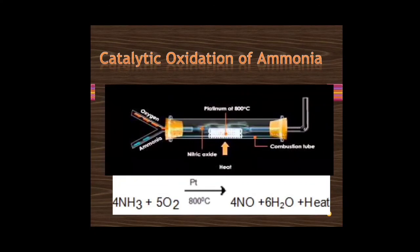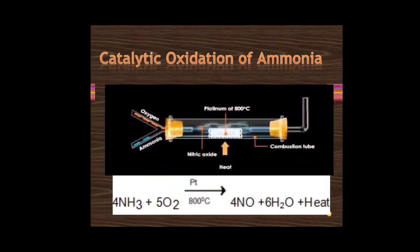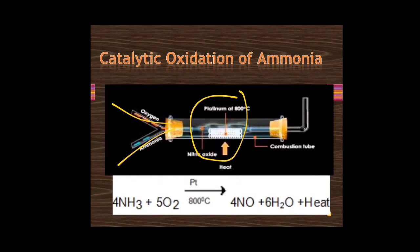Catalytic oxidation of ammonia: when ammonia gas and oxygen gas are allowed to enter a catalytic chamber with a catalyst like platinum at around 800 degrees Celsius, nitric oxide (NO) gas and water are generated as products.